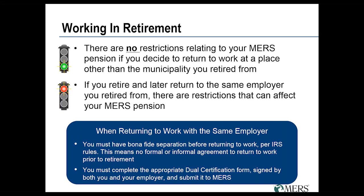A question came up: with the certain period payment options, are you able to name multiple beneficiaries? Yes — the certain period options give you the ability to name multiple beneficiaries, who can equally split those remaining pension payments if you pass away within that certain period. You can also change those beneficiaries even after you're retired.